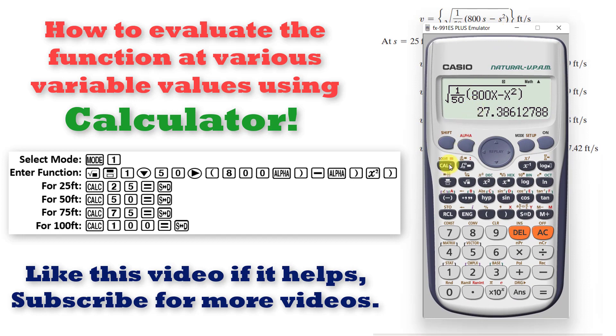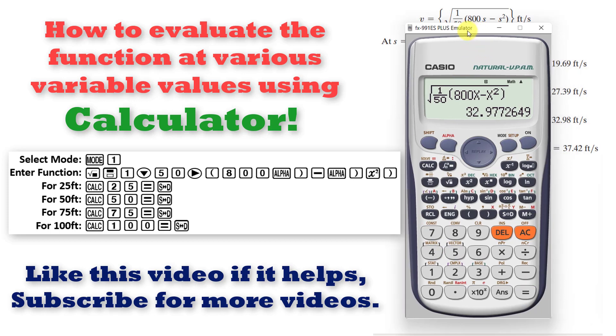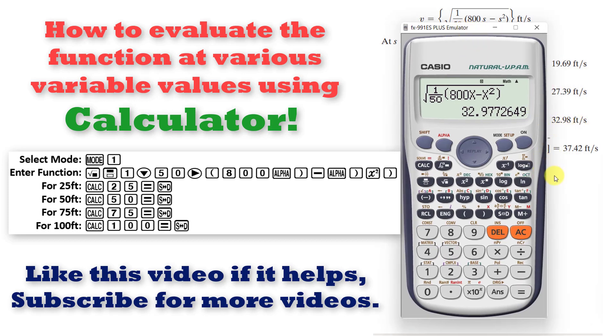Then for 75 calculate, 75 equal and then 32.9777 which is 32.98.